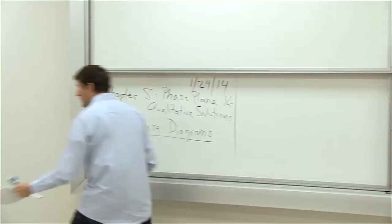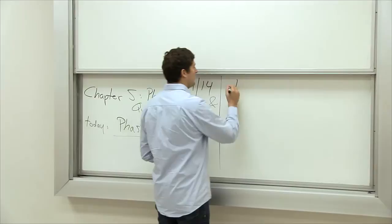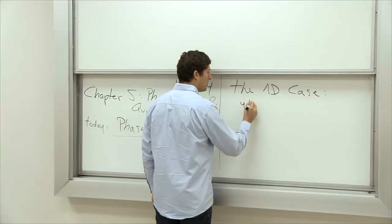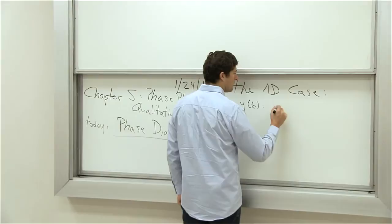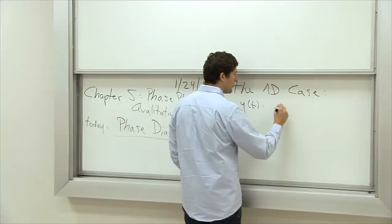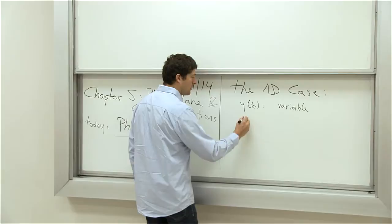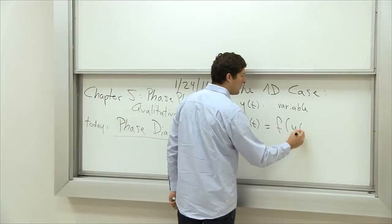The simplest case is the one-dimensional case. We're going to have a single variable over time — concentration, population, only one variable — and an equation y prime of t equals f of y of t. Sometimes we'll get rid of the t and just write y prime equals f of y.